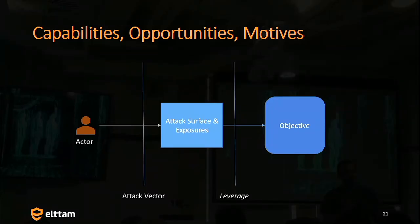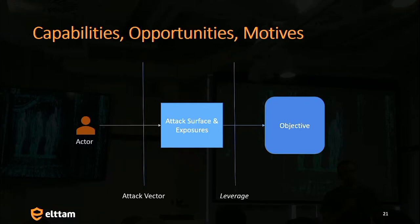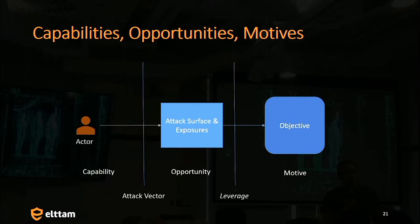Going back to this diagram: if you have a threat actor — someone who's sophisticated, opportunistic, or an insider — we present to them attack surface and exposures. They want to meet an objective: maybe get access to personal information for your customers, steal secrets out of your source code, or just find a common vulnerability class and exploit it opportunistically. We need to think about the capabilities the actor has, the opportunity we present to them, and their motive. For us, we want to understand the capability, limit the opportunity, and consider the motive.